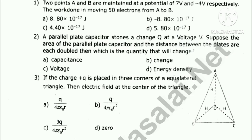Let's see. 2 points A and B are maintained at a potential of 7V and minus 4V respectively. The work done in moving 50 electrons from A to B.